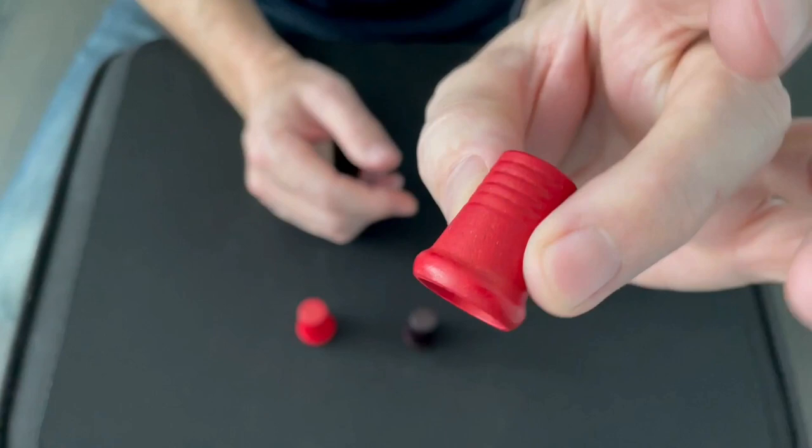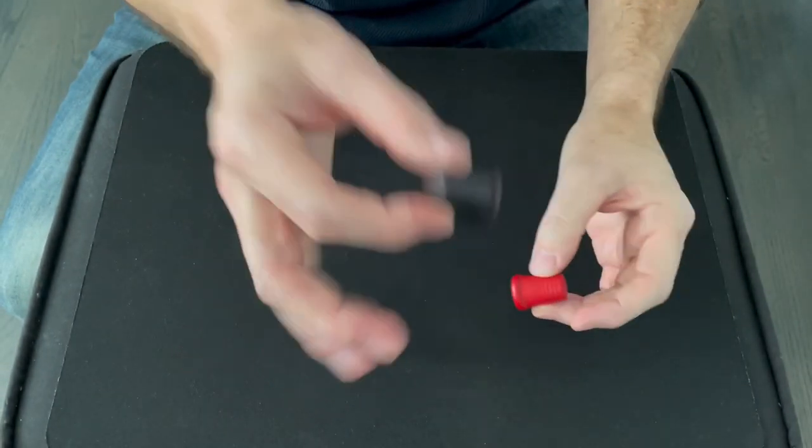In this video, I use wooden thimbles, but I recommend getting the plastic ones that nest into each other. I'll put a link in the comments.